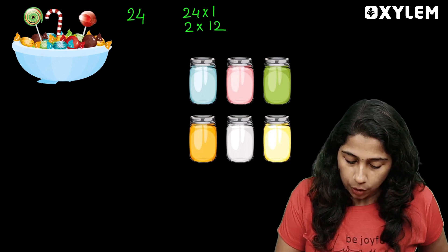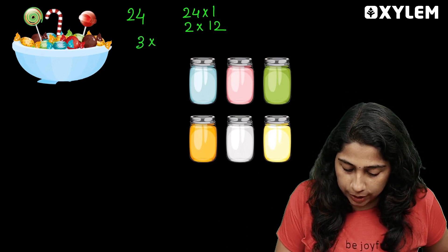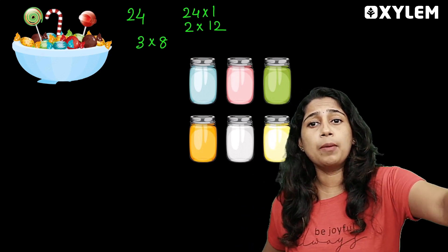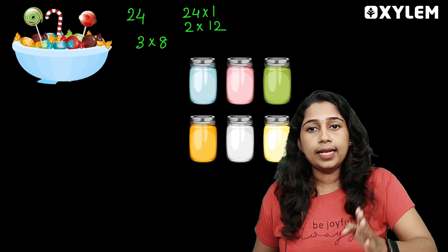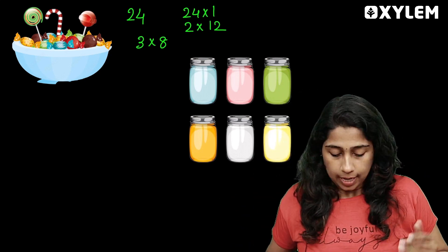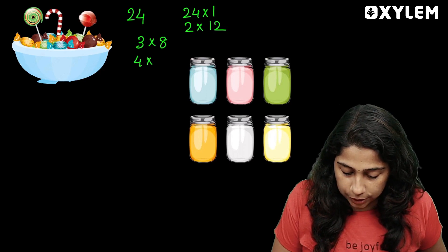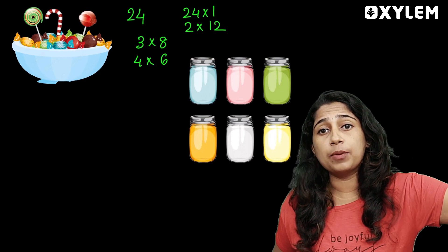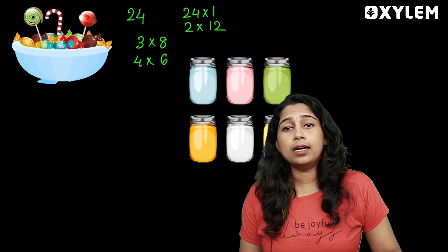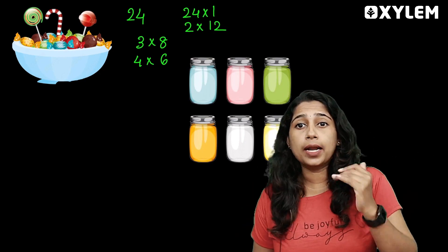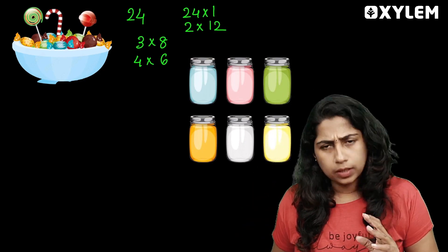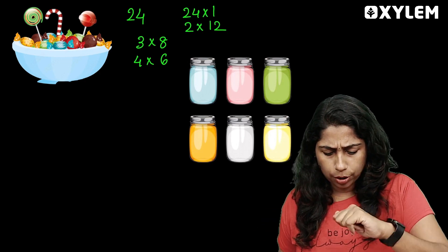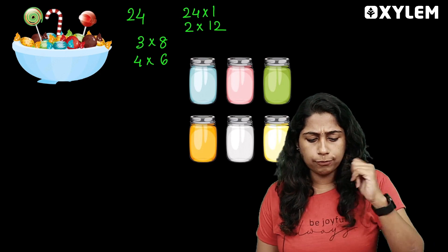In the same way, 3 candies each — how many groups? 8 groups. 3, 3, 3, 3. In the same way, 6 candies each — how many groups? 4 groups. You can see: 4 candies gives 6 groups. So we have: 24×1, 2×12, 4×6.